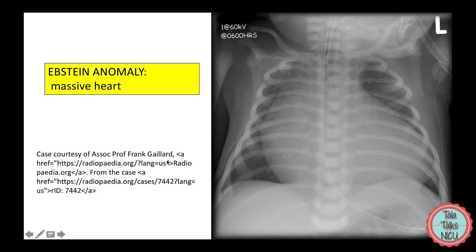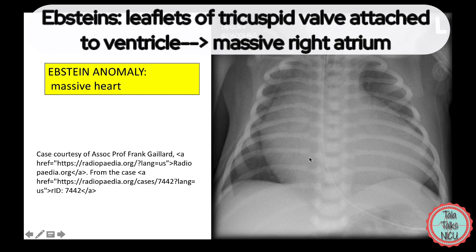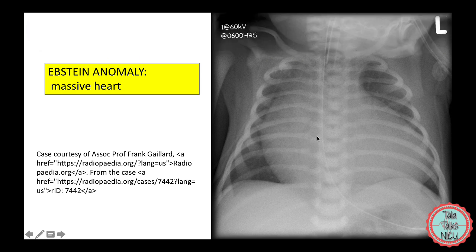Let's talk about Ebstein's malformation of the tricuspid valve, because it really is one of the few heart diseases where you can make the diagnosis based on the chest x-ray. You can see how absolutely massive the heart is. In Ebstein's, the leaflets of the tricuspid valve are attached to the ventricle, so a large part of the right side of the heart is effectively the atrium — making it massive. If you see a blue baby with this chest x-ray, you pretty much have your diagnosis.